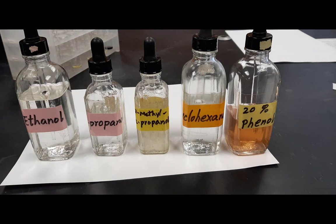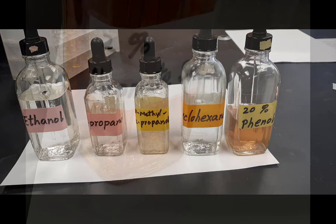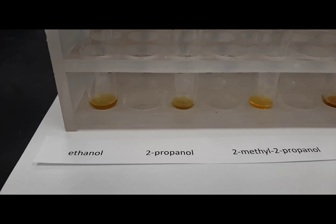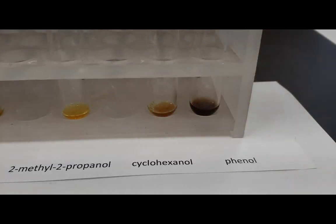Here's a picture of all five alcohols and the phenol. You'll notice the phenol is the only one with a color to it, and this is the orange chromate solution. Here is a result of adding the chromate solution to ethanol, 2-propanol, and 2-methyl-2-propanol going from left to right. Here is the result of adding it again to 2-methyl-2-propanol, cyclohexanol, and then finally phenol.